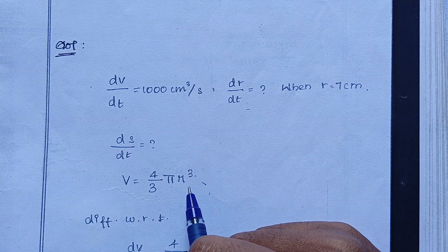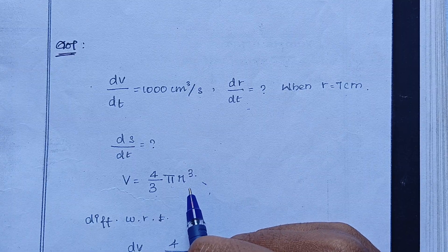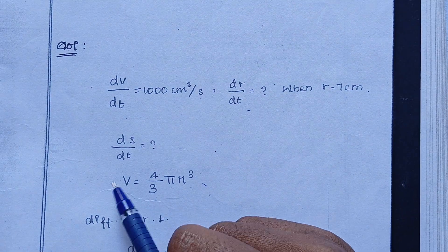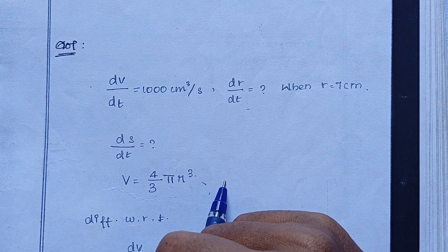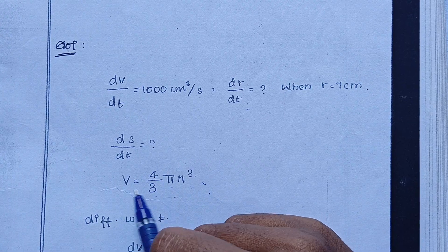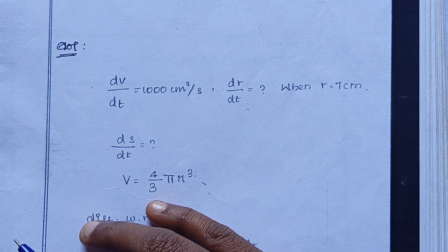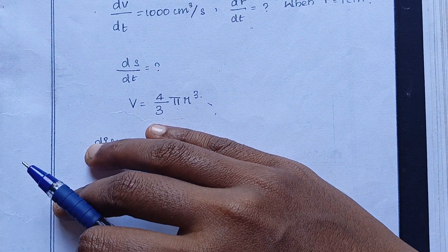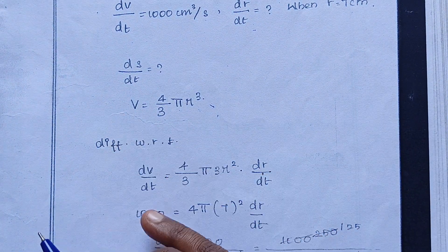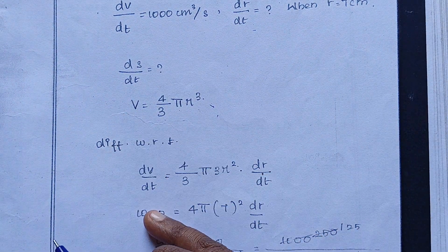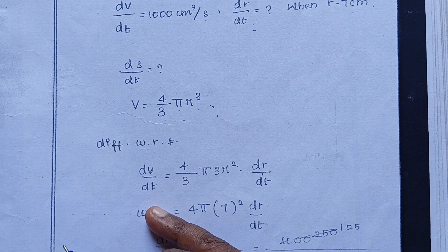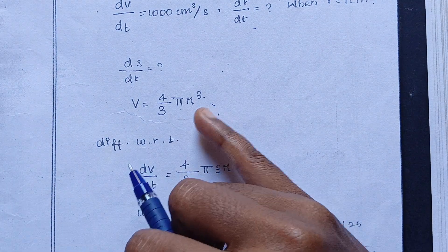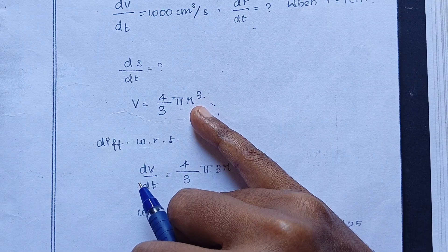We need to find dr by dt. We will apply the formula and differentiate with respect to t — chain rule. So, dV by dt: we differentiate 4 by 3 pi r cube with respect to t.